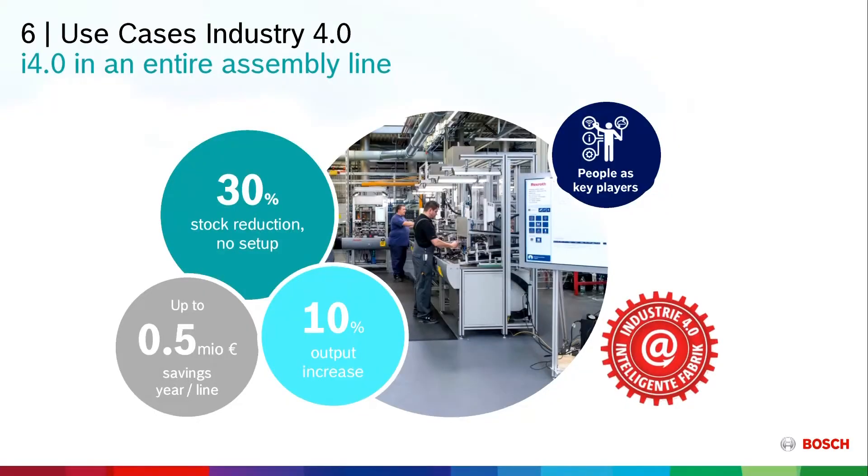After those two individual examples, the question is: can we use Industry 4.0 across a whole assembly line? The answer is yes. We have done this in Hamburg at our Rexroth plant. The challenge there was that they produce a huge variety of hydraulic valves — 200 different types from more than 2,000 components — a huge complexity. Up to now they needed seven different lines for that, and the challenge was whether we could combine all of that on one line.